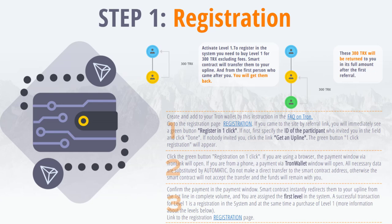Click the green 'Sign up per one click' button. If you are using a browser, the payment window opens via Tron Link. If you are using a mobile phone, the payment window opens via Tron wallet. All necessary data is entered automatically. Do not make a direct transfer to the smart contract address, otherwise the smart contract will not accept the transfer and the funds will remain with you. Confirm the payment in the payment window. The smart contract immediately redirects them to your first line upline in full, and assigns you the first level in the system.